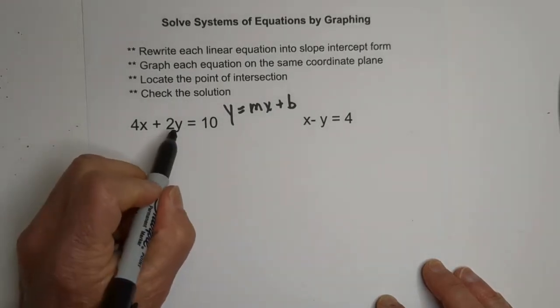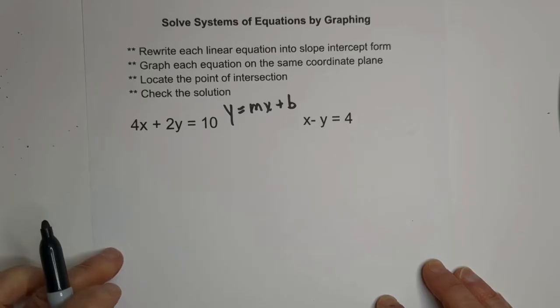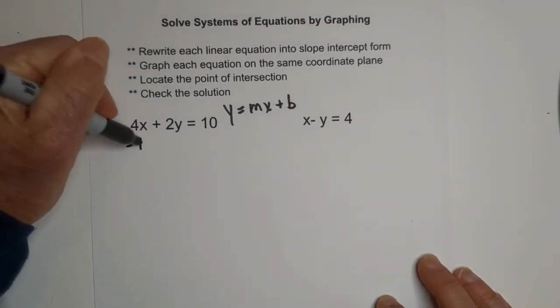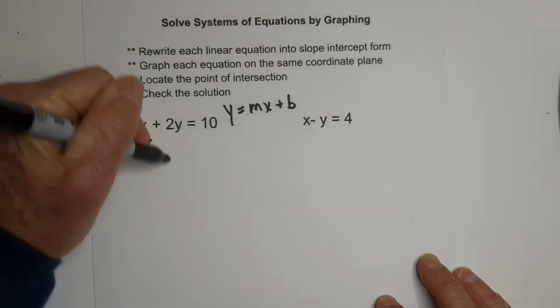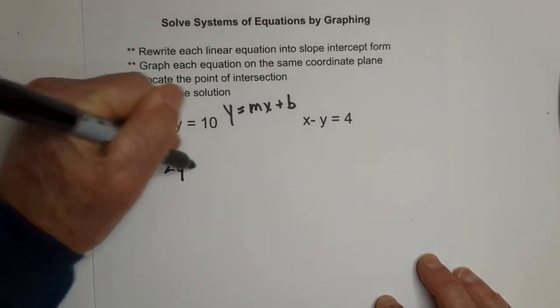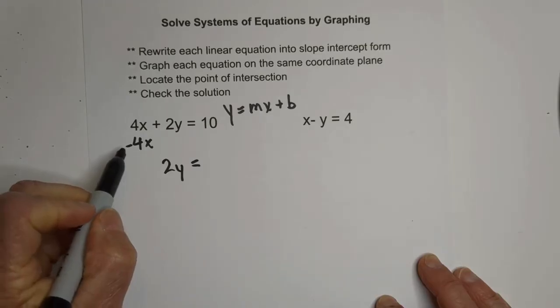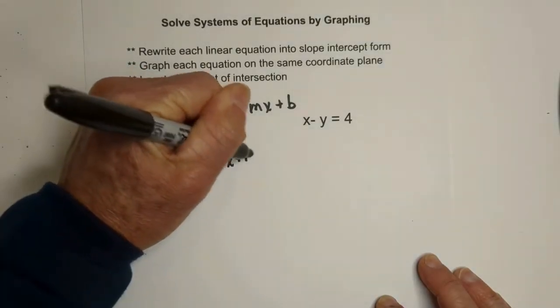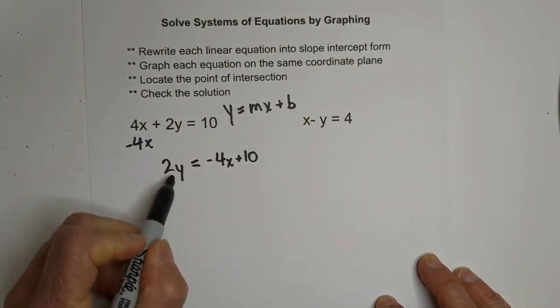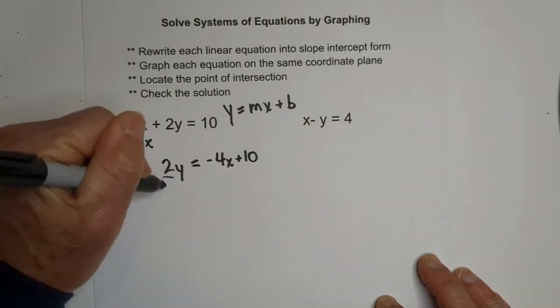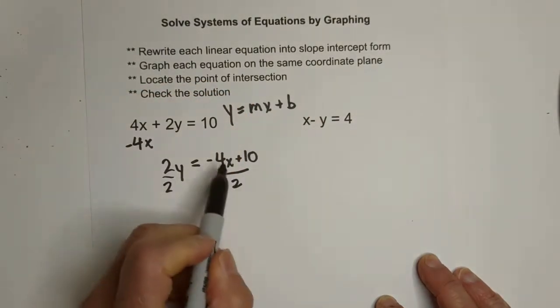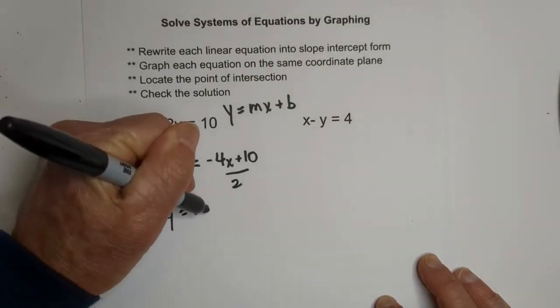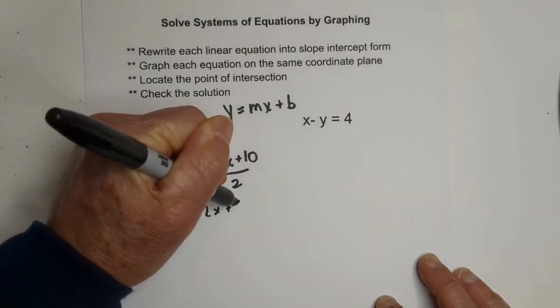So we need to get the y isolated. Let's first subtract 4x from each side to move it to the other side. So I'm going to bring this down. It's going to be 2y equals negative 4x plus 10. I'm now going to divide each side by 2, and remember you divide both of these. So these cancel. You get y equals negative 2x plus 5.